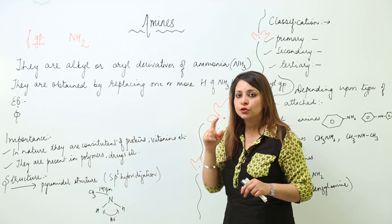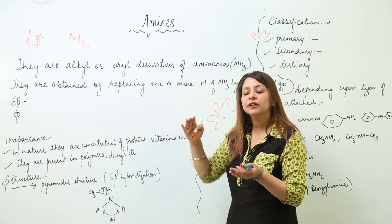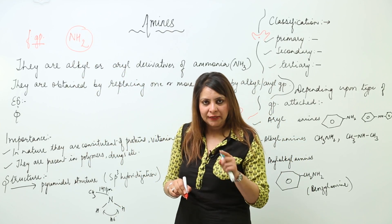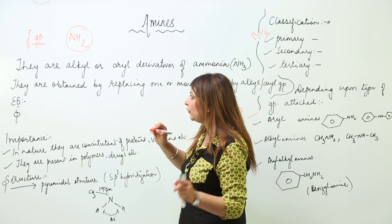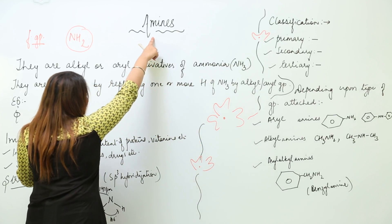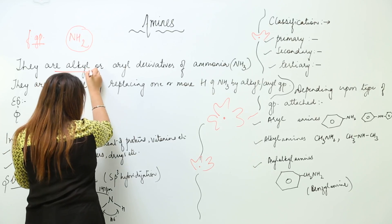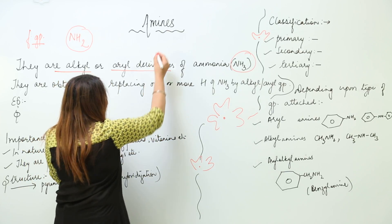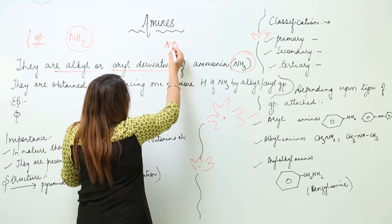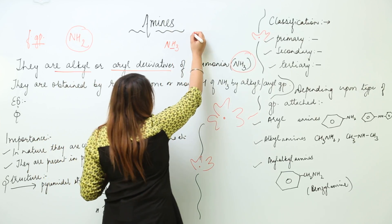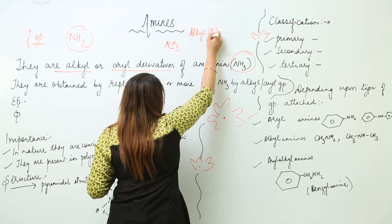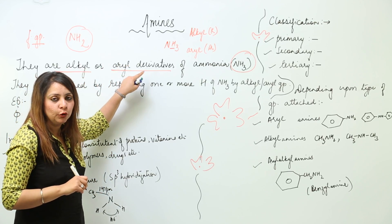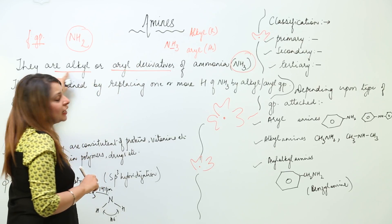To study about amines, we should know that this group cannot be present alone — it is present with some alkyl or aryl group. So how are amines obtained? They are alkyl or aryl derivatives of ammonia. Ammonia is NH3, so when one or more H atoms are replaced by an alkyl group (R) or an aryl group (Ar), we get the derivatives of ammonia called amines.